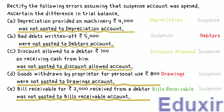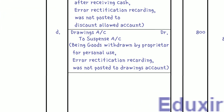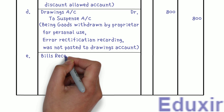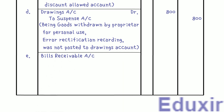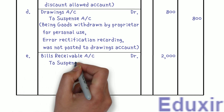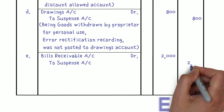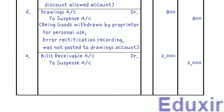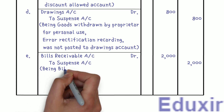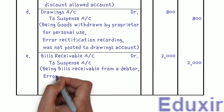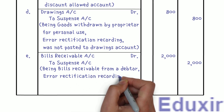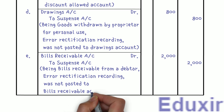Let us now record the journal entry. Bills Receivable Account Dr — 2000 rupees. To Suspense Account — 2000 rupees. Narration: Being bills receivable from a debtor; error rectification recording, was not posted to Bills Receivable Account. With that, we have completed the journal entries for all the error rectification entries.